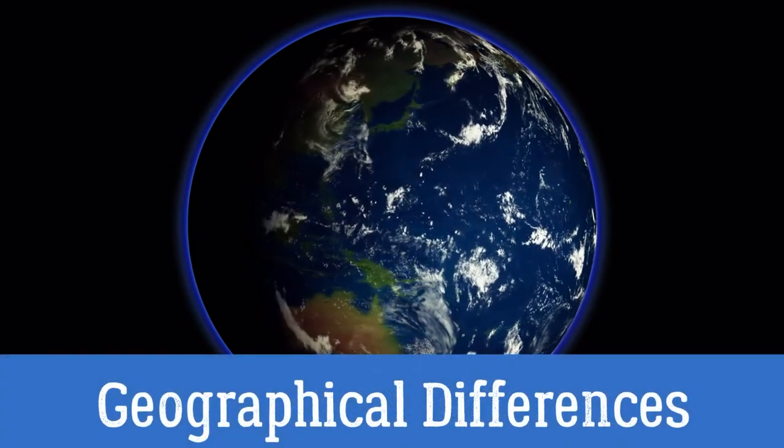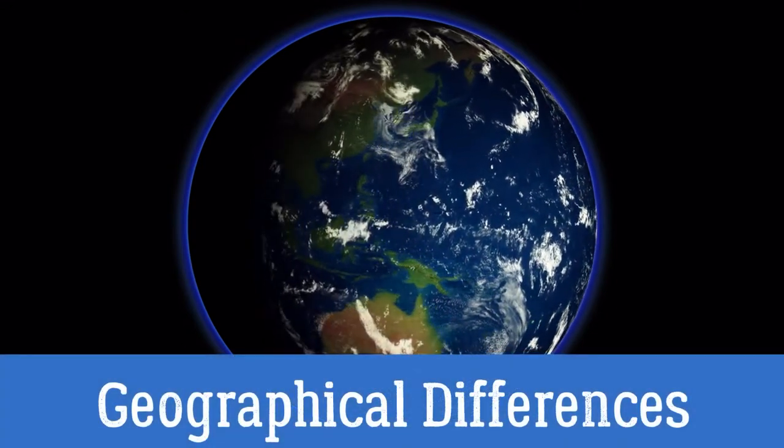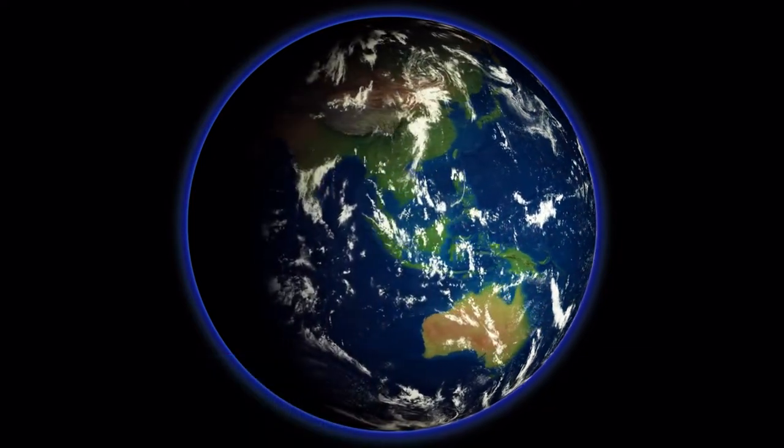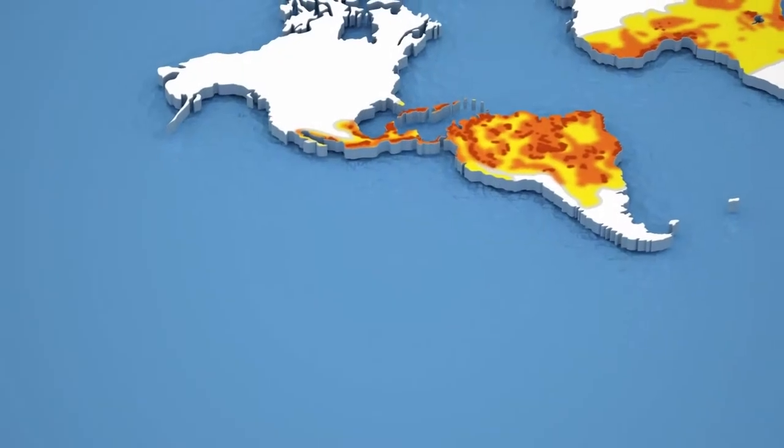Geographical Differences. The Northern Hemisphere refers to the half of the planet that is north of the equator, while the Southern Hemisphere is all of the planet south of the equator.